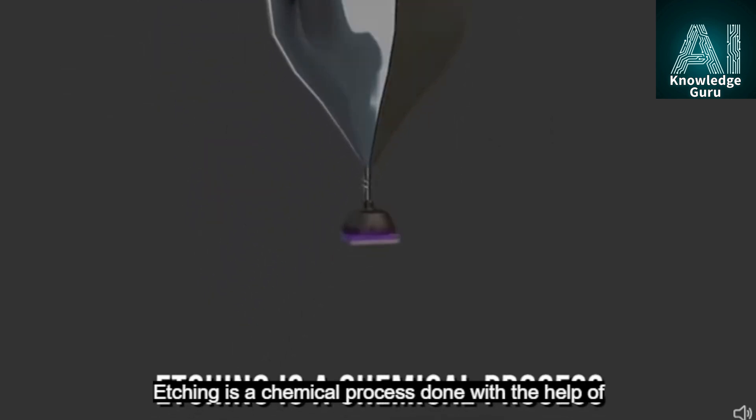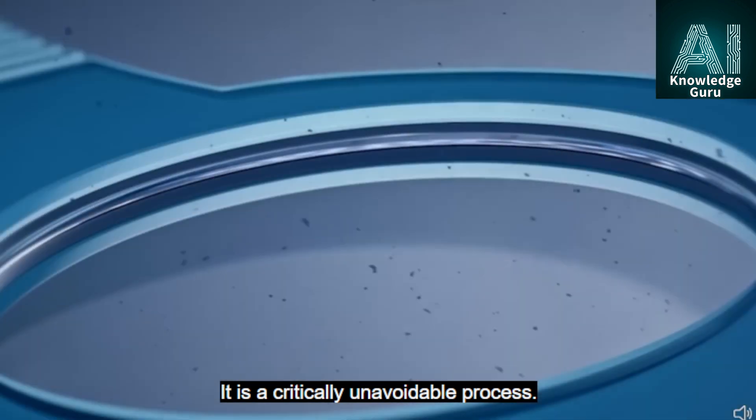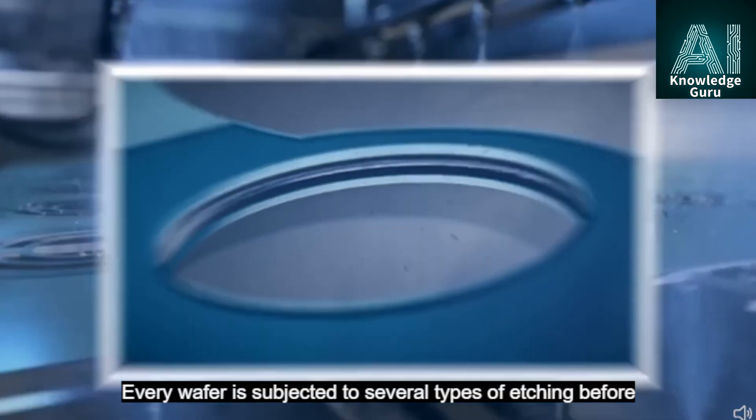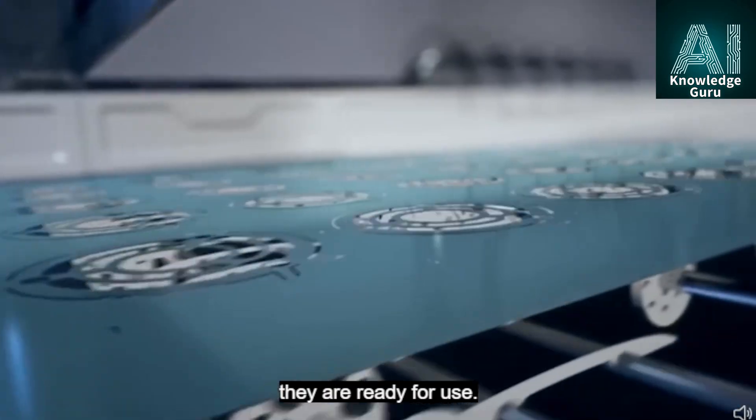Etching is a chemical process done with the help of a chemical solvent. It is a critically unavoidable process. Every wafer is subjected to several types of etching before they are ready for use.